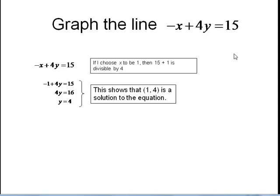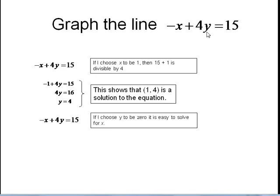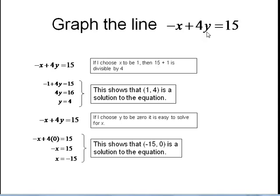Now I want another point. I can pick another value for x and solve for y, or I can pick a value for y. If I pick y equals 0, this becomes a very easy equation to solve for x. When I choose y to be 0 and solve for x, I get negative x plus 4 times 0 equals 15. So negative x equals 15, and solving we get x equals negative 15. That tells me the pair (-15, 0) is a solution to this equation.